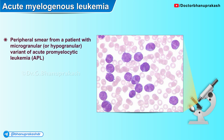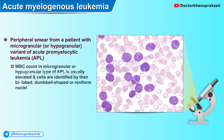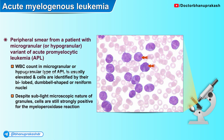Here is another peripheral smear from a patient with the microgranular variant of acute promyelocytic leukemia. The white blood cell count in the microgranular type is usually elevated, and the cells are identified by their bilobed, dumbbell-shaped, or reniform nuclei. The cells have no recognizable granules by light microscopy, but granules are present and can be seen by electron microscopy. Despite this, the cells are still strongly positive for the myeloperoxidase reaction.